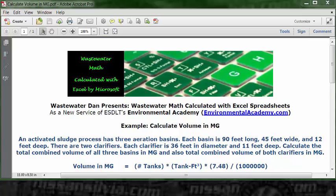Today's example, calculate volume in MG. Today's problem reads, an activated sludge process has three aeration basins. Each basin is 90 feet long, 45 feet wide, and 12 feet deep.